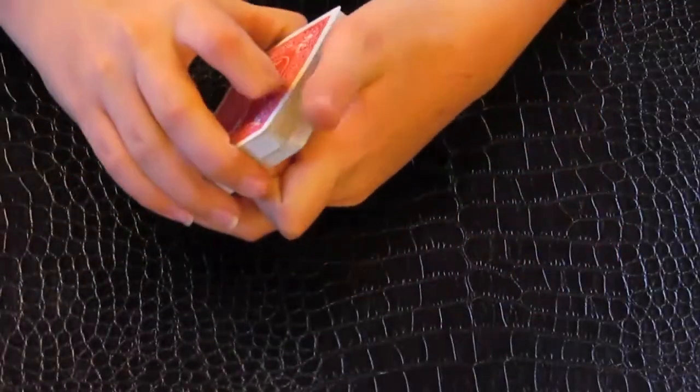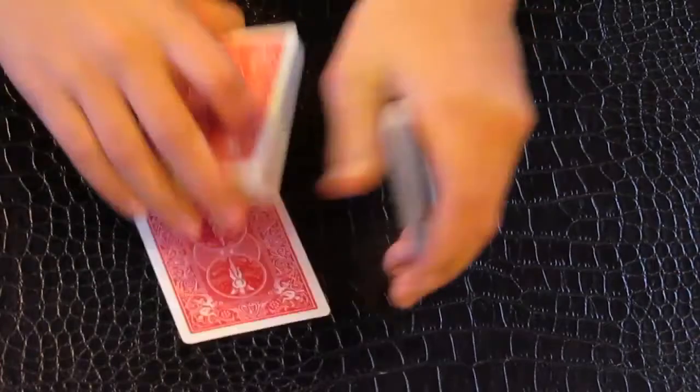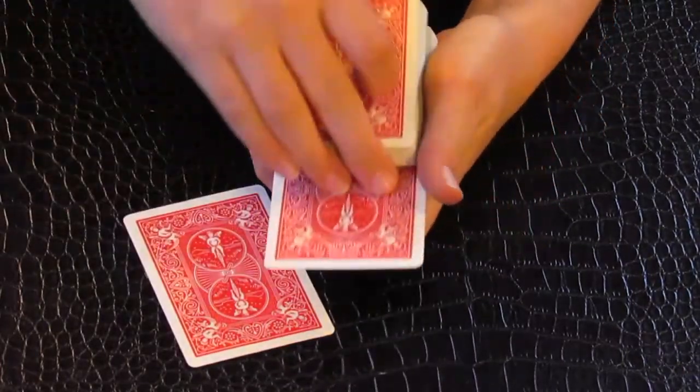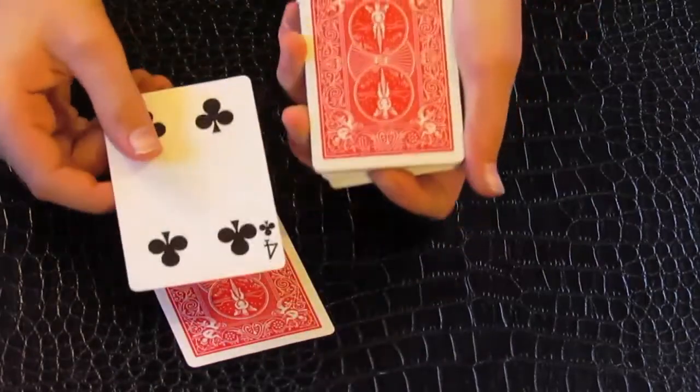You have the spectator say stop anywhere they like. Stop. That's their card. Now if they would have stopped one card above it, it would have been a 3. If they would have stopped one card below it, it would have been a 4.